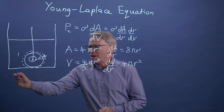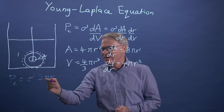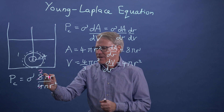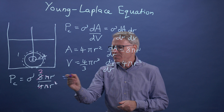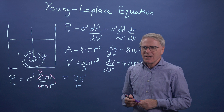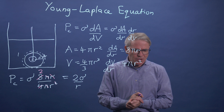So Pc = σ × (8πr) / (4πr²). The π's cancel and r cancels with r², giving us the final result: Pc = 2σ/r. The capillary pressure of a spherical droplet is 2σ divided by r. We now introduce the concept of curvature.